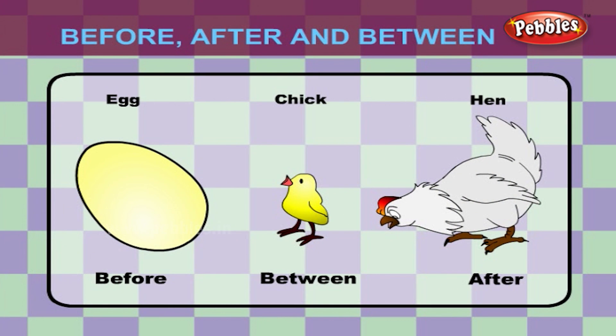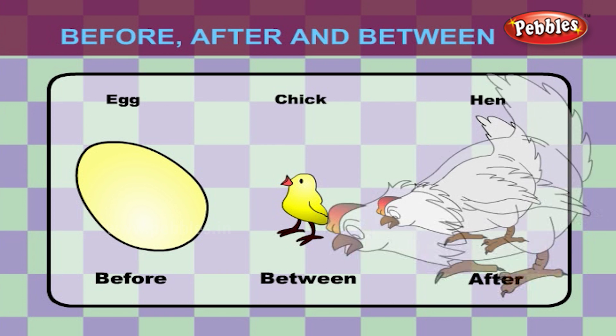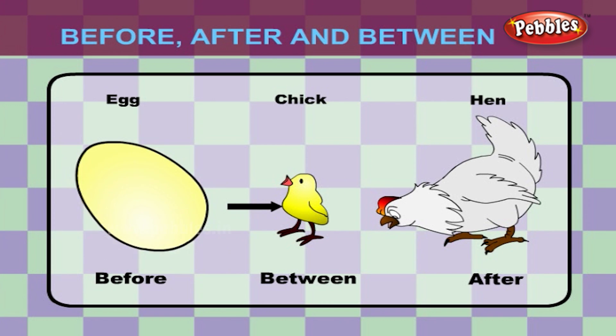In this figure, you can see the position of the egg, chick and the hen. The egg is before the chick and the hen is after the chick. The chick is found between the egg and the hen.